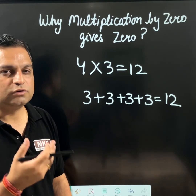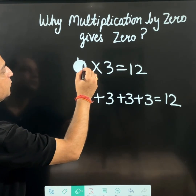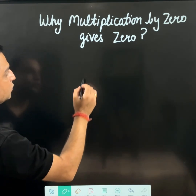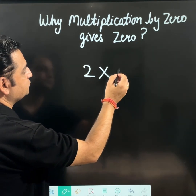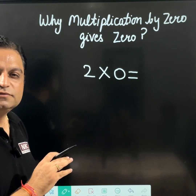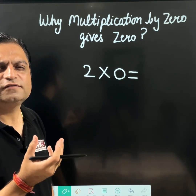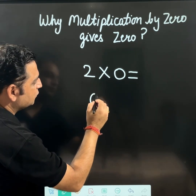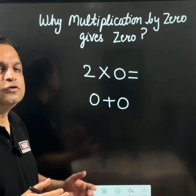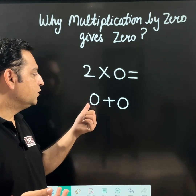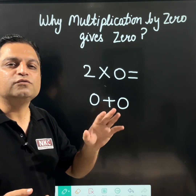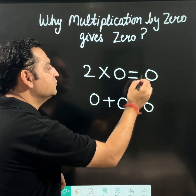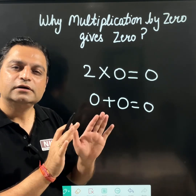Now coming to our question. Let us suppose my question was 2 times 0. What does that mean? 2 times 0 means 0 is being added twice. 0 means nothing. When nothing is added twice, you will get nothing, right? So that is why 0 plus 0 is 0. This is the reason 2 times 0 is 0.